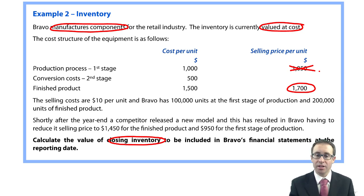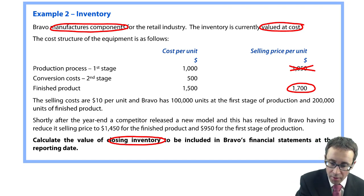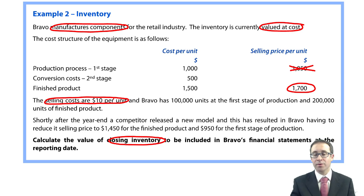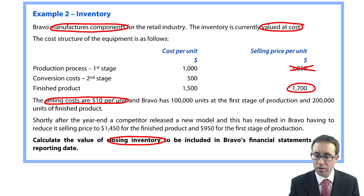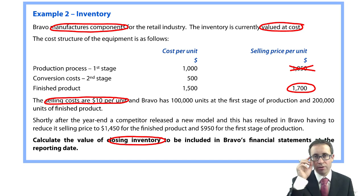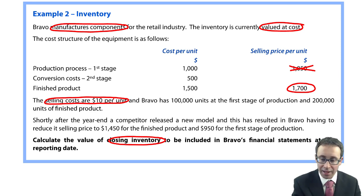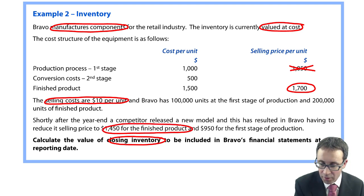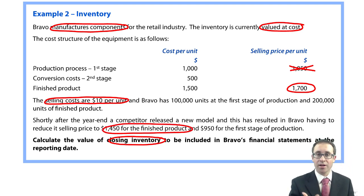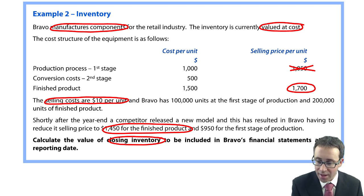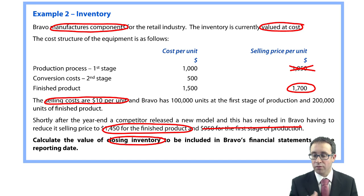Now we consider the additional information. There are selling costs of £10 per unit, which we need to apply to the selling price. We're told there are 100,000 units in the first stage and 200,000 finished goods. Shortly after the year end — an adjusting event — a competitor released a new model, and this has resulted in Bravo having to reduce its selling price to $1,450 for the finished product. That's what we use to work out our NRV. The $950 quoted for the first stage of production is not relevant when we look at NRV; we work out NRV based upon the selling price of the finished product.